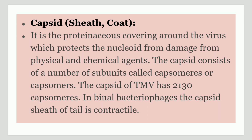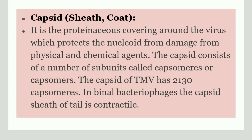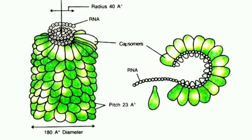A TMV virus has over 2130 capsomers in the capsid. In some bacteriophages, the capsid sheath is contractile. In the diagram, tobacco mosaic virus — known as TMV — shows the green layer as the capsid layer, which is the proteinaceous layer covering the inner RNA. This capsid is made up of several small subunits, where each single subunit is called a capsomere, and several capsomeres join together to form a capsid layer.